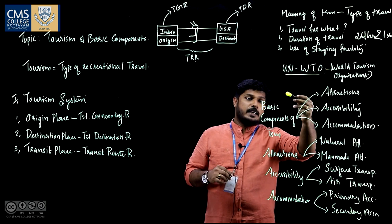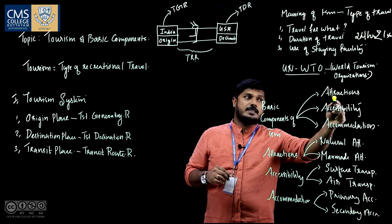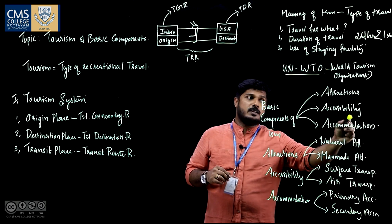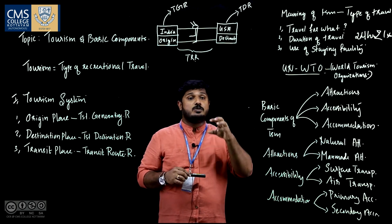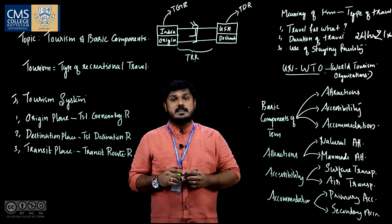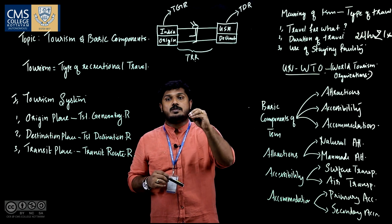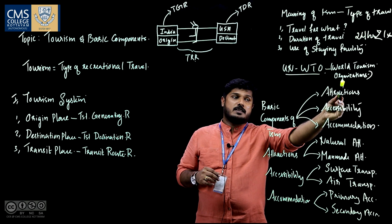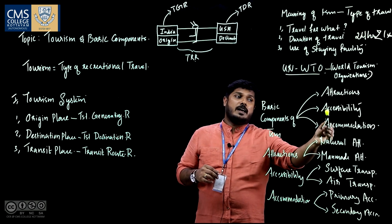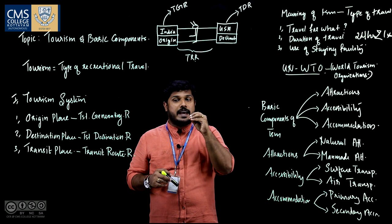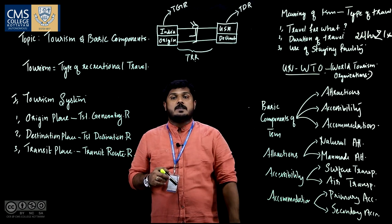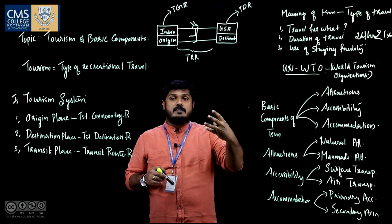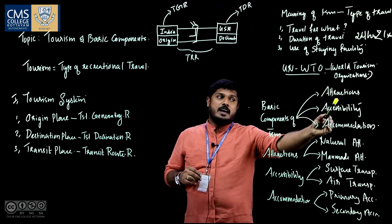Once again, the basic components of tourism are attractions, accessibility, and accommodation. Attraction means to attract tourists to a specified destination — whatever kind of resources attract tourists to a particular destination can be called attractions. Accessibility simply means to access tourists to a specified destination; it is simply known as transportation — transporting travelers to a specified destination.